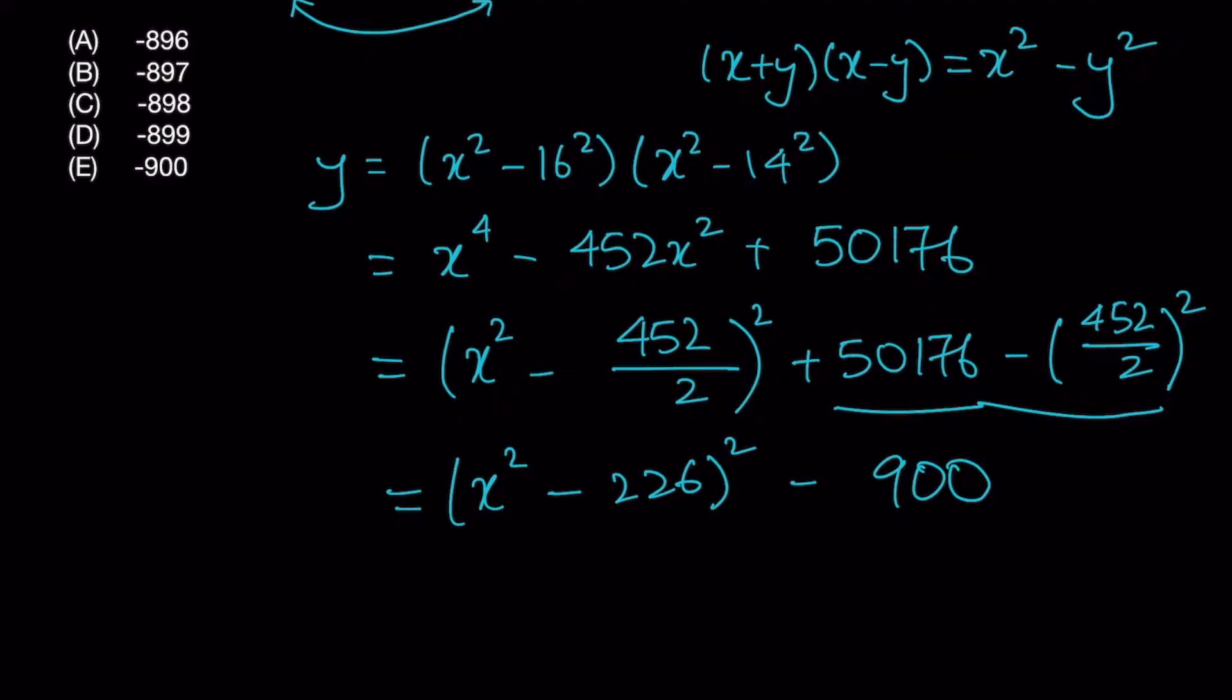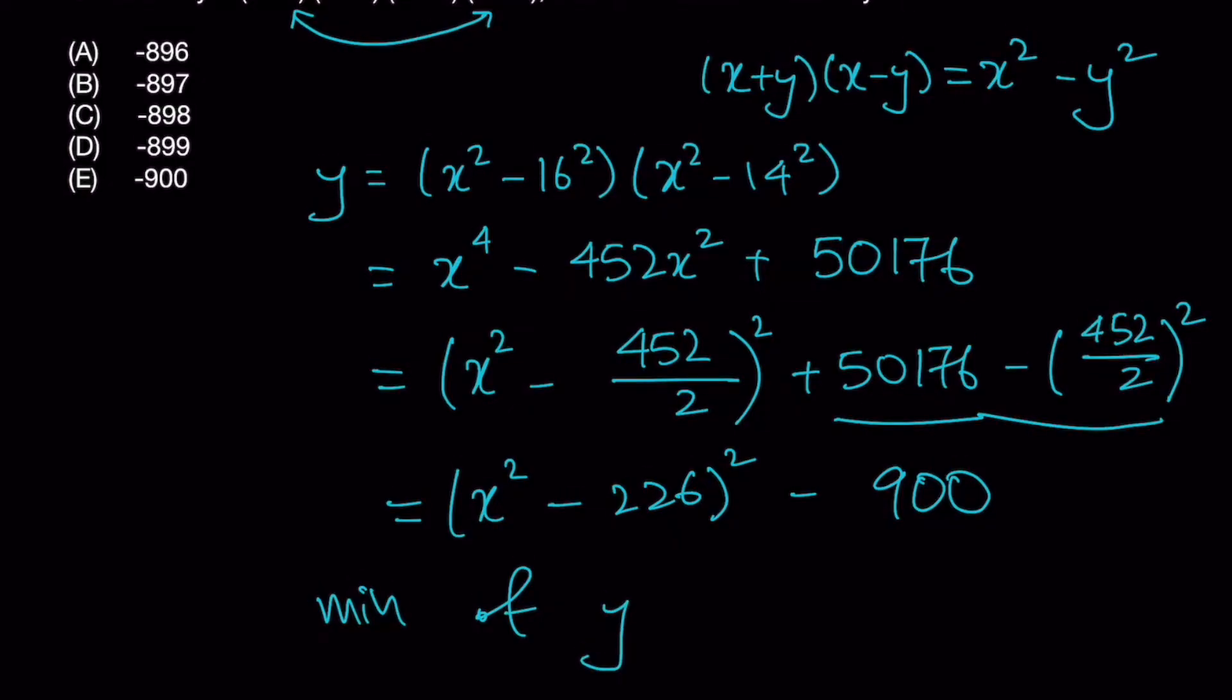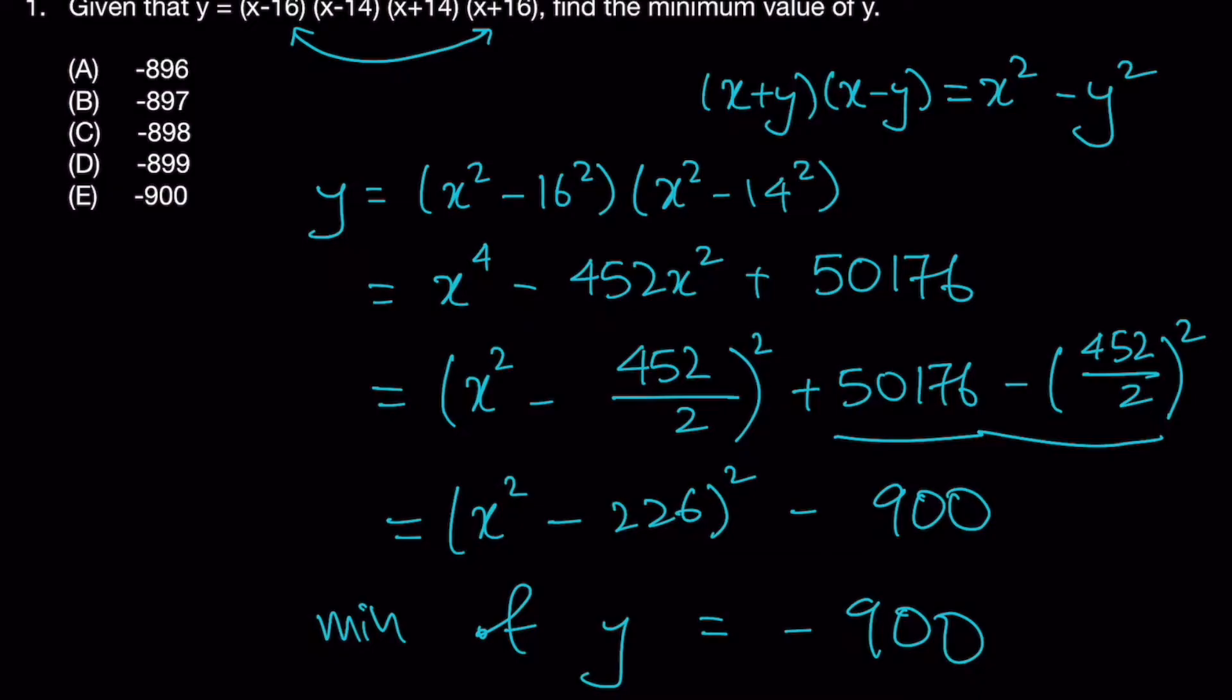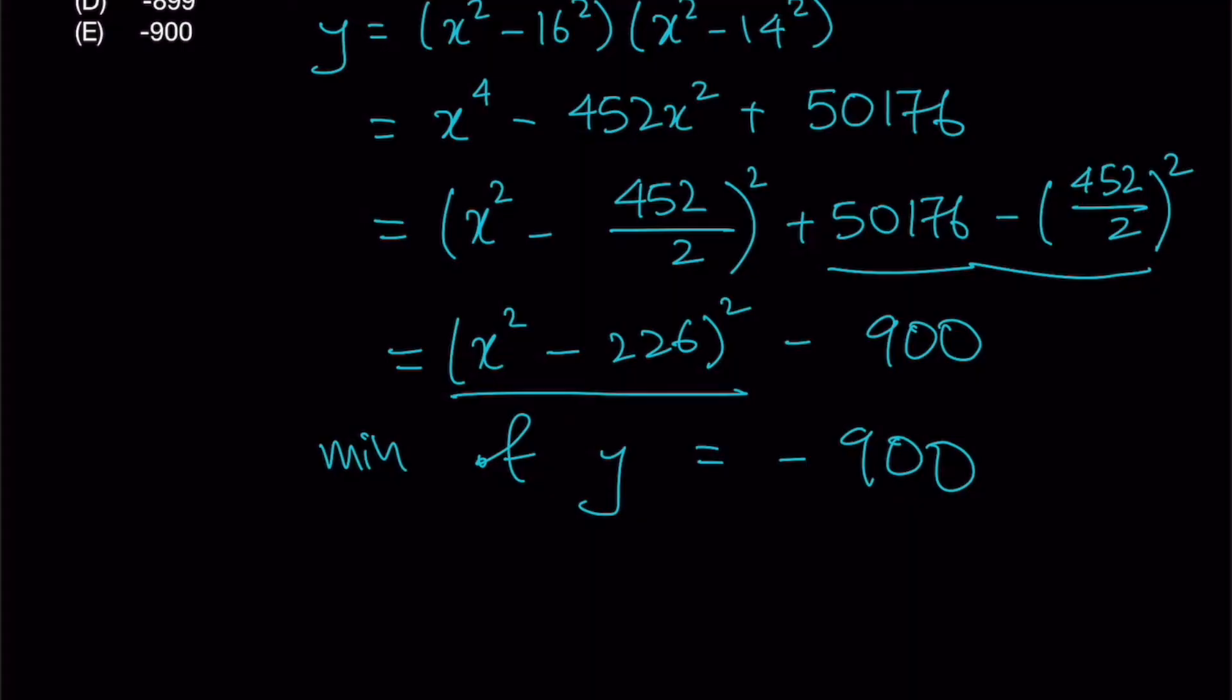And here we'll get minus 900. And from here we can see that the minimum value of y is equal to negative 900. As we can see that this value can take on 0. So the minimum value of y is negative 900. Therefore your answer is E.